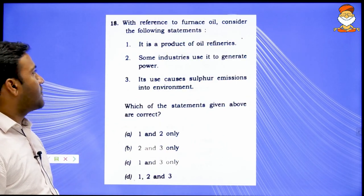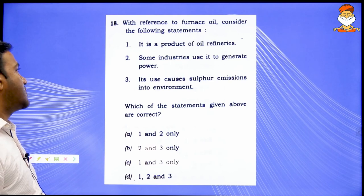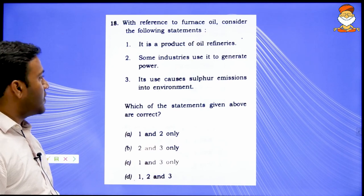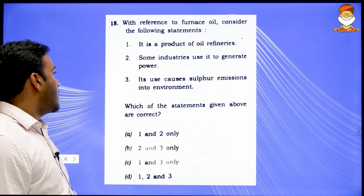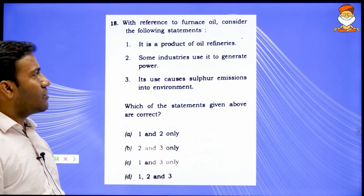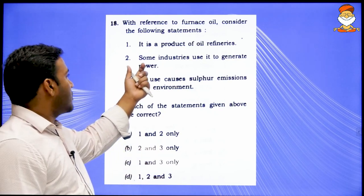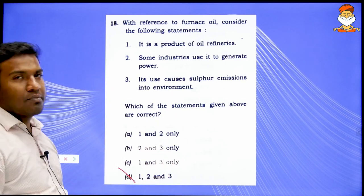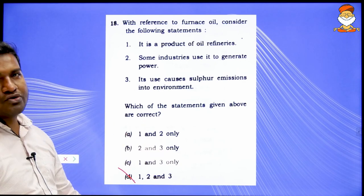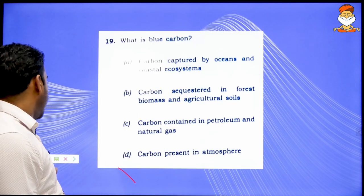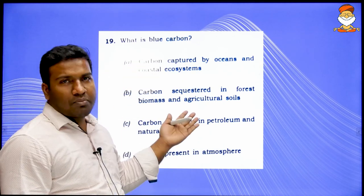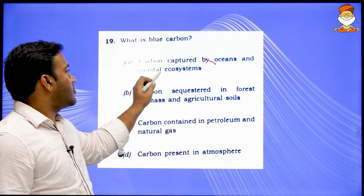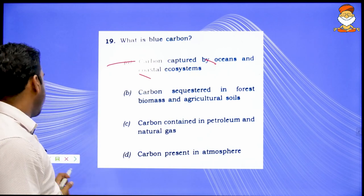With reference to furnace oil: it is a product of oil refineries; some industries use it to generate power; its use causes sulphur emissions. All statements are moderate — no extreme words like 'lethal.' All of the above is a formidable answer — hit it without wasting time. Then, what is blue carbon? Obviously, carbon sequestered in ocean and coastal ecosystems. Hit it immediately — do not waste time on easy questions.